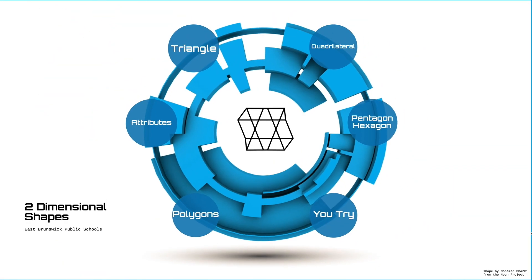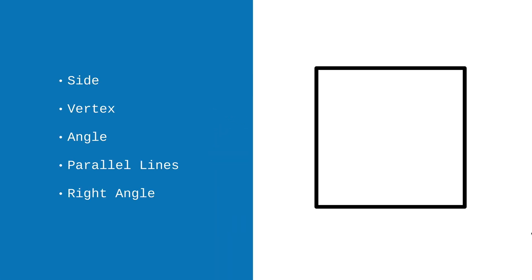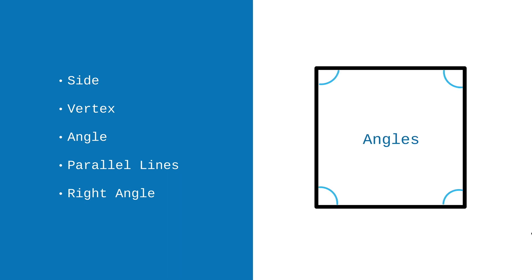Now let's talk about the ways we describe shapes. These are called attributes. When we are describing shapes, we think about different attributes or features of that shape. One of the things that we think about when we talk about a shape are the sides — how many sides does a shape have. The rectangle here on the right has four sides. A vertex is where two lines meet, and you can see on this shape there are four vertices. Vertices is the word we use to say more than one vertex. A vertex is the point where two angles meet, and the angle is the distance between them. In this shape, there are four angles.